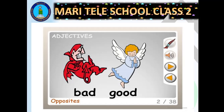Now, opposite words. In this picture, you can see a witch and a fairy. The witch is bad and the fairy is good. So 'bad' and 'good' are opposite words — and they are both adjectives.